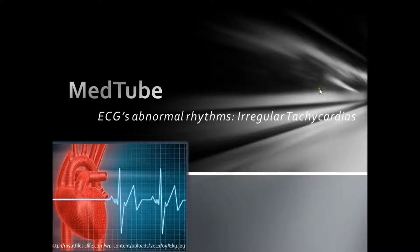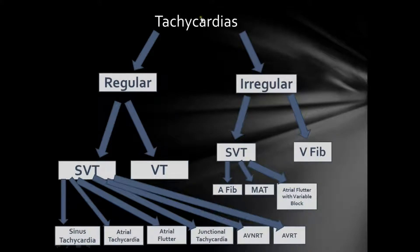Hello guys and welcome to our last video of the ECG's Abnormal Rhythm Series: the Irregular Tachycardias. If you recall from one of our previous videos, irregular tachycardias are divided into SVTs and ventricular fibrillation. SVTs are again classified into atrial fibrillation, multifocal atrial tachycardia, and atrial flutter with variable block.